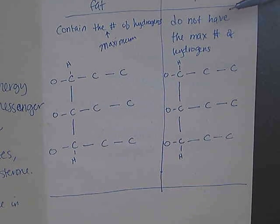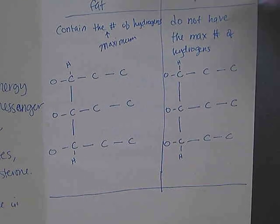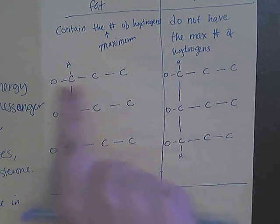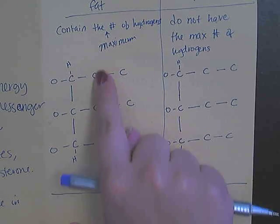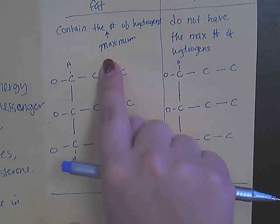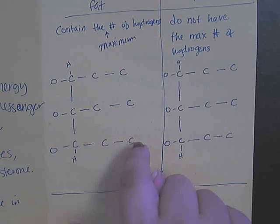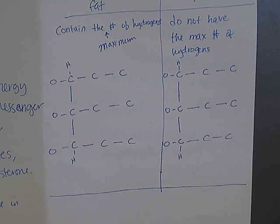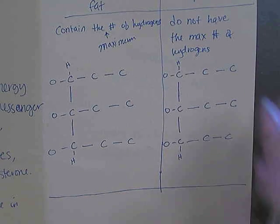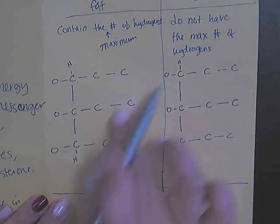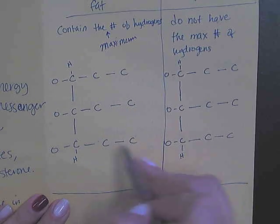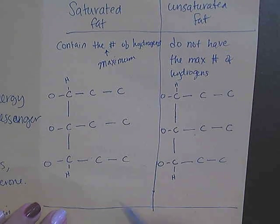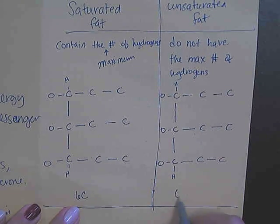In both saturated and unsaturated fats I should have the same number of carbons. I'm going to count just this portion here — one, two, three, four, five, six carbons. Both my saturated and unsaturated fats have six carbons to start with.